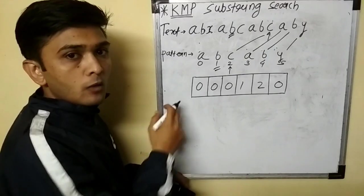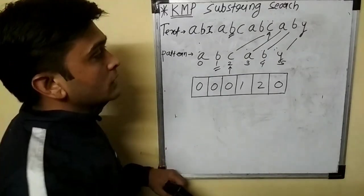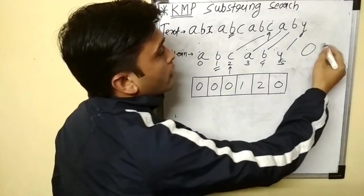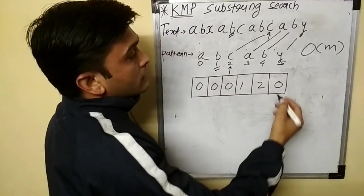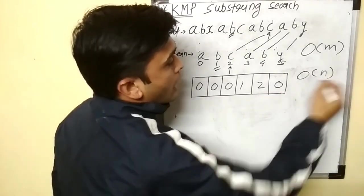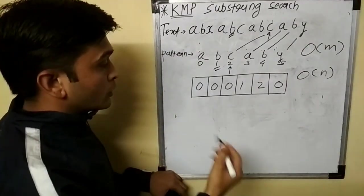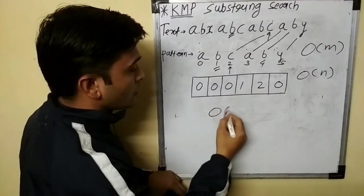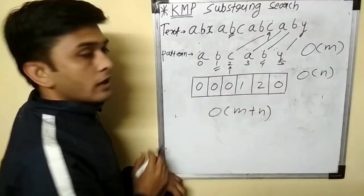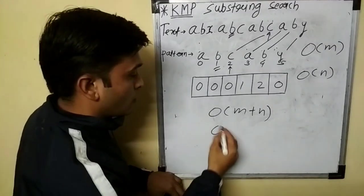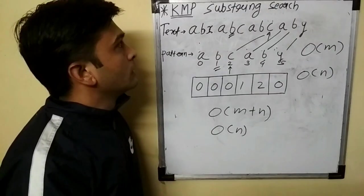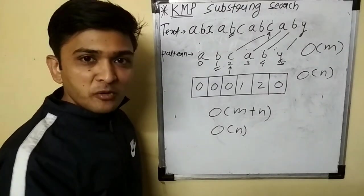The runtime complexity for the KMP search is O(M), and the time to build the temporary array is O(N), so the total time complexity is O(M + N). The space complexity for KMP substring search is O(N). That's all about Morris algorithm or KMP substring search. Thank you very much.